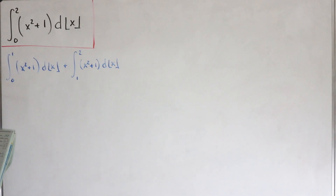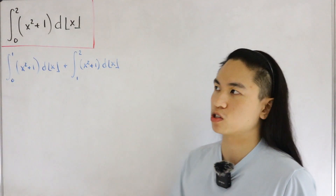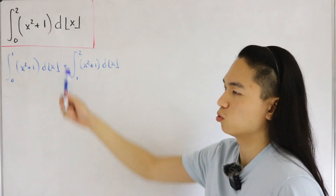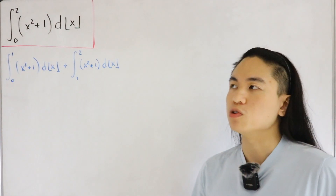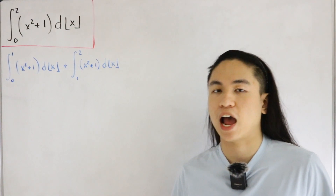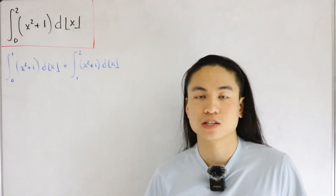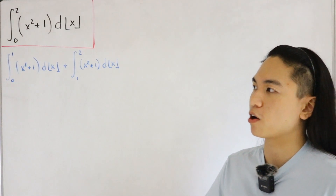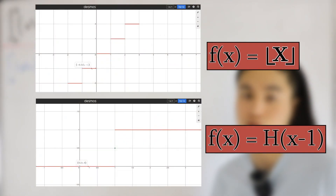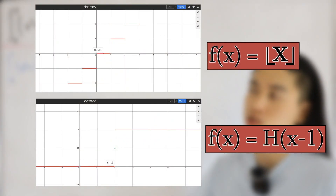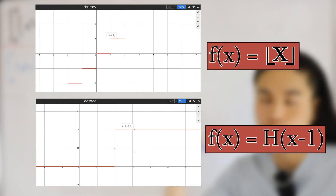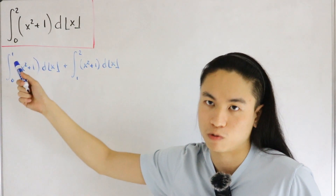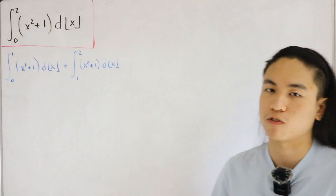Now you might wonder — what's the purpose of breaking up the bounds? We want to figure out how the floor function behaves on each subinterval. If you graph the floor function, it's a step function. When you look at the derivative of the floor function on the graph and compare it to the derivative of the Heaviside function, you'll notice they are actually very similar — especially when we focus on our bounds from zero to one, and the same argument applies from one to two.